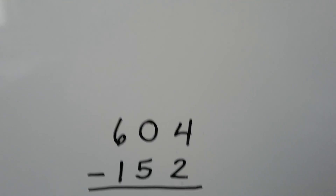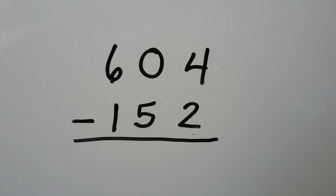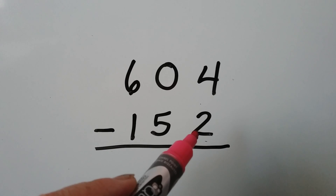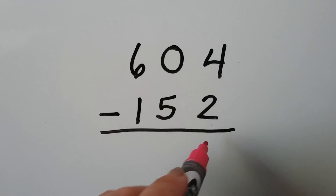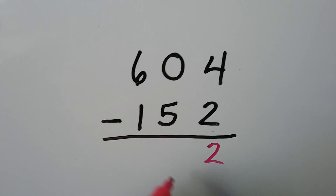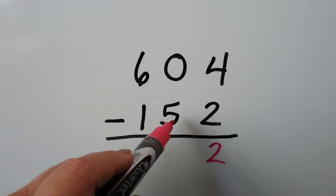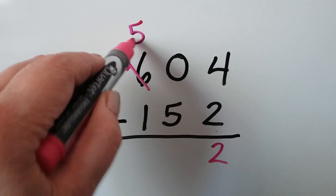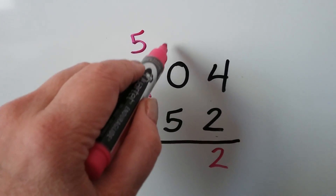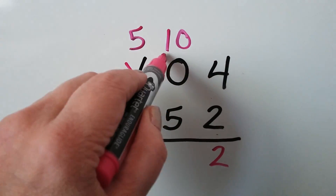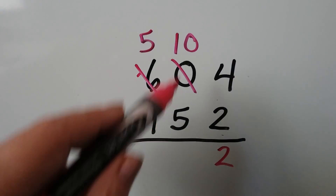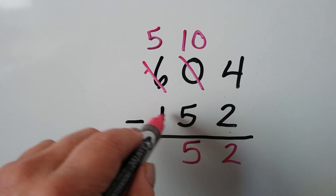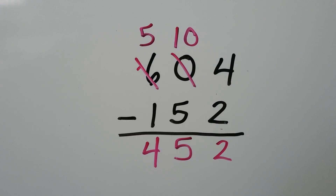Let's try this one. We have 604 and we need to subtract 152. We have four take away two — we can do that, we don't need to regroup. That's a two. We have zero take away five — we need to regroup because that zero is too small. This becomes a five, and we give that to the tens place. Ten tens make a hundred, so we have ten tens now. Ten take away five is five. And five take away one is four. We have 452.